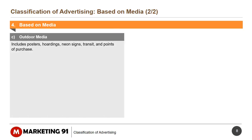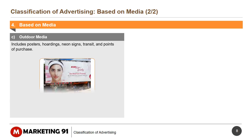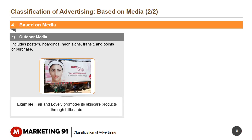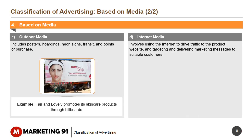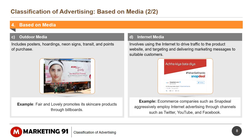Outdoor media includes posters, hoardings, neon signs, transit, and points of purchase. For example, Fair and Lovely promotes its skincare products through billboards. Internet media involves using the internet to drive traffic to the product website and targeting and delivering marketing messages to suitable customers. For example, e-commerce companies such as Snapdeal aggressively employ internet advertising through channels such as Twitter, YouTube, and Facebook.